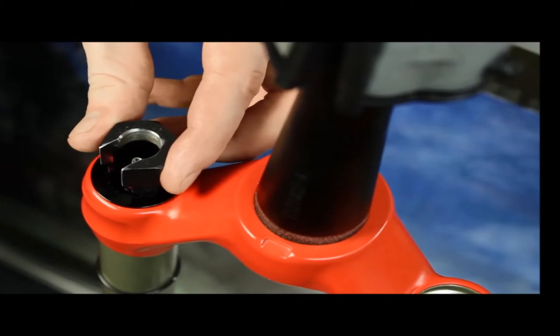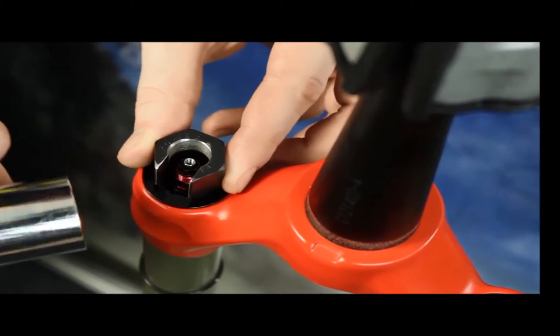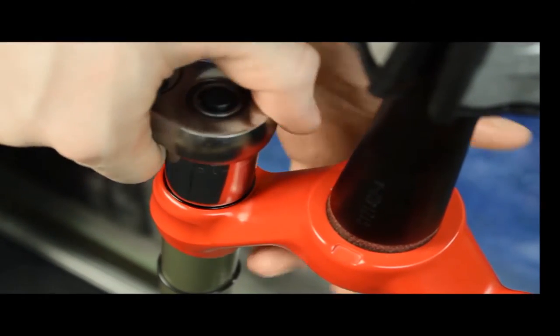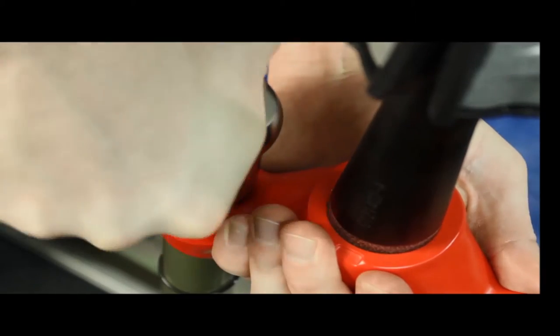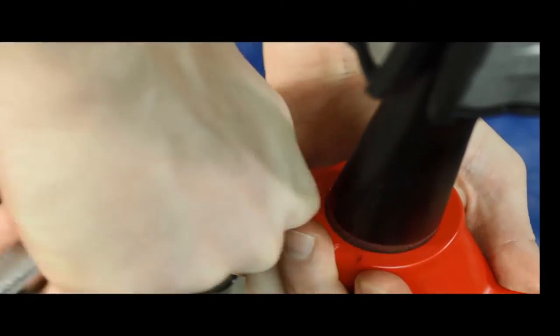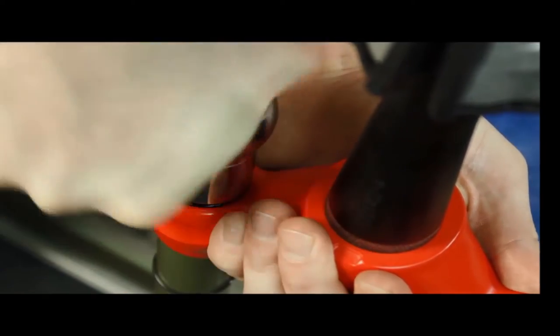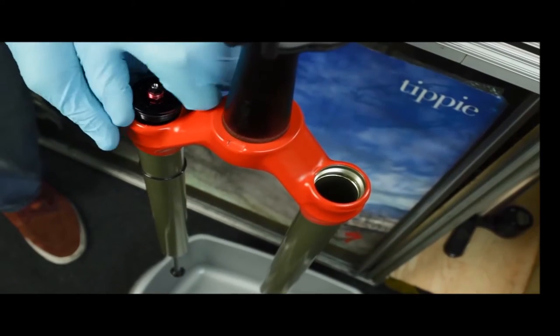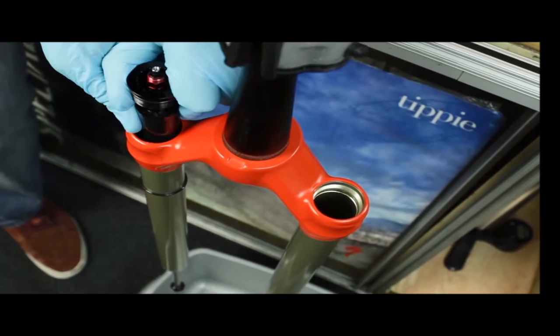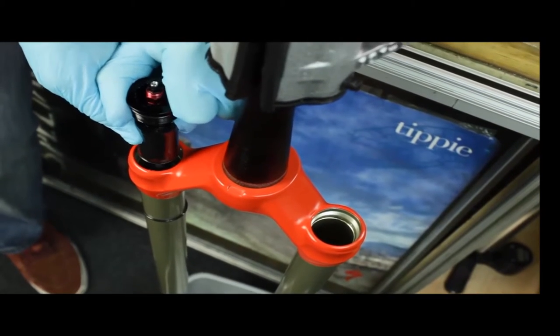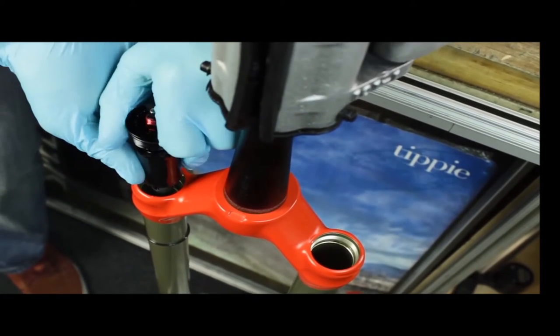Insert the Matic cassette tool and with a ratchet loosen the cap of the MC squared assembly. Loosen the cap until it no longer migrates up in relation to the crown. It may make a couple of clicks after every revolution when it is fully unthreaded. You can now extract the MC squared assembly from the crown steer assembly by pulling it straight up and out.